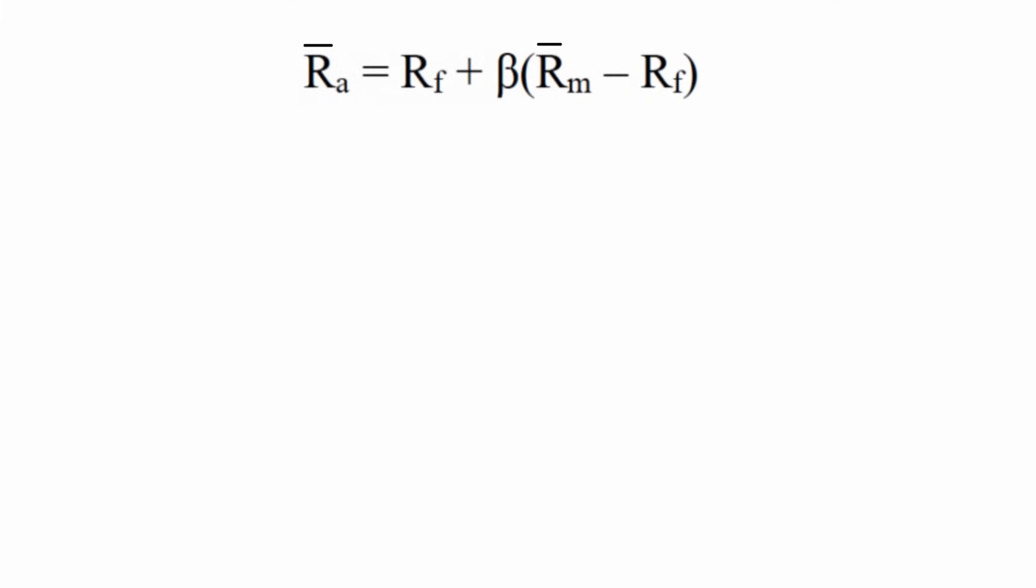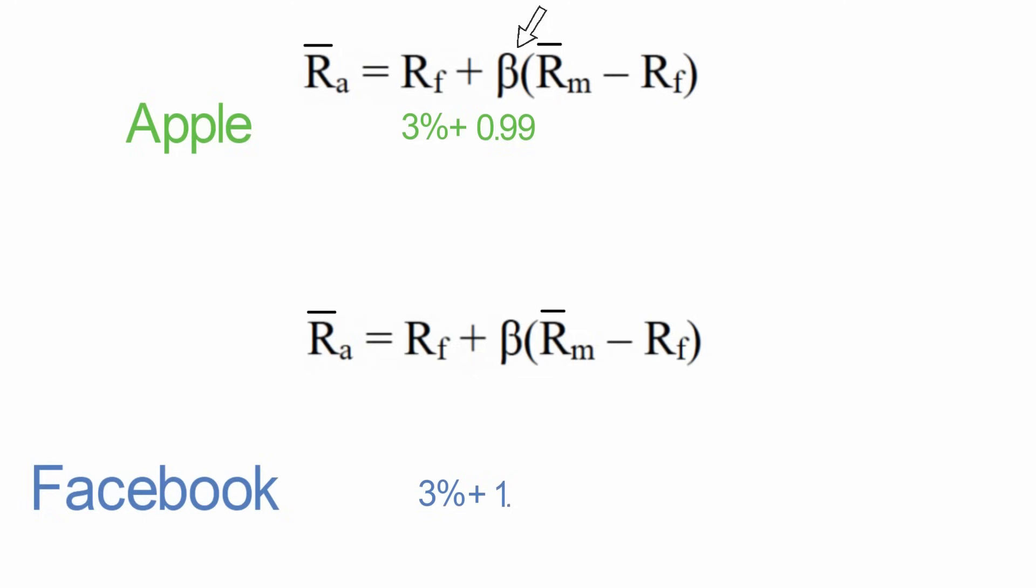So Rf is the risk-free rate. So here we could plug in 3%. This symbol here, this is a Greek symbol for beta. For Apple, we can replace this beta with 0.99. And we can put Facebook's formula down here. And there we will put 1.2. Then in the parentheses, we have the expected market return minus the risk-free rate. They call this the market premium. For the expected market return, we're using 9%. And for the risk-free rate, it's the same as the 3% that we're using over here.